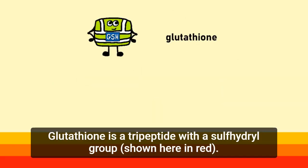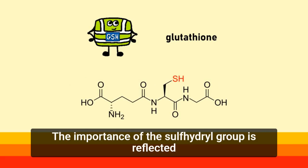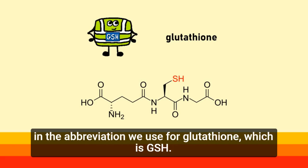Glutathione is a tripeptide, with the sulfhydryl group shown here in red. The importance of the sulfhydryl group is reflected in the abbreviation we use for glutathione, which is GSH.